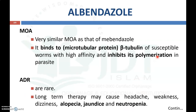The next drug used as an anthelmintic is albendazole. The mechanism of action is the same as that of mebendazole: it will bind with the microtubular protein or beta-tubulin of susceptible worms with higher affinity, thereby inhibiting its polymerization in parasites and killing the worms. The adverse drug reactions are rare compared with mebendazole, but after long-term therapy it may cause headache, weakness, dizziness, alopecia, jaundice, and neutropenia.